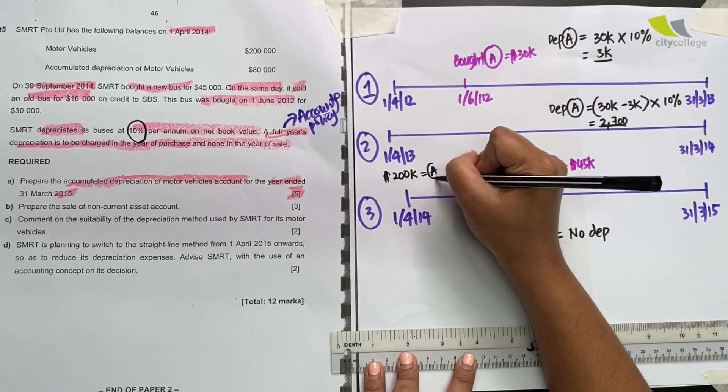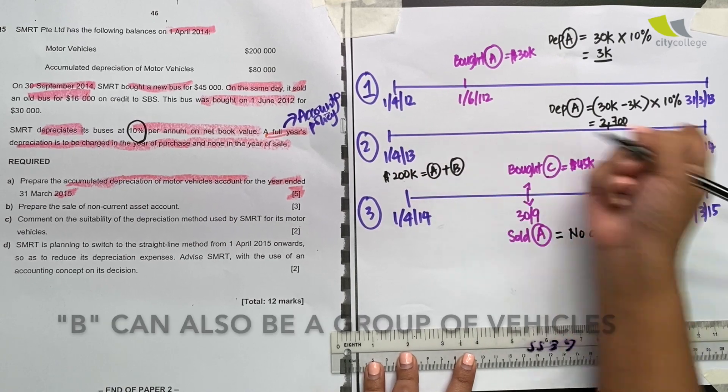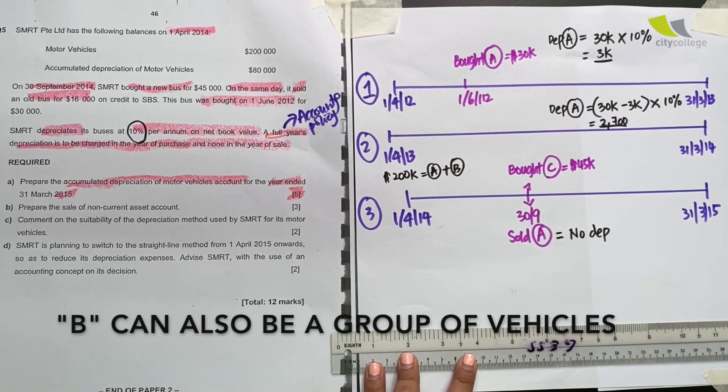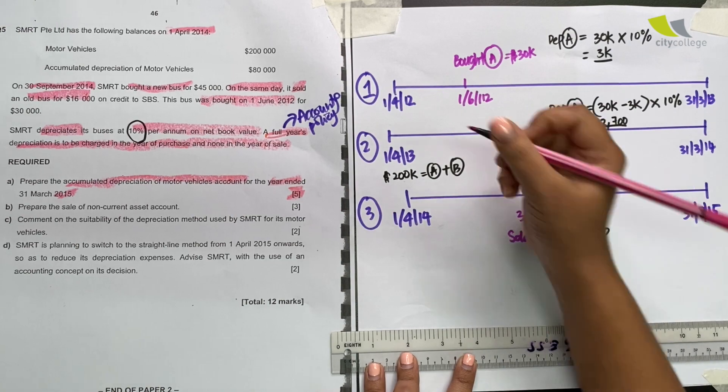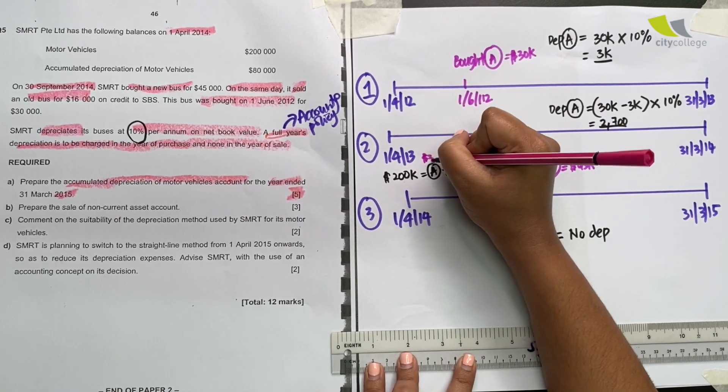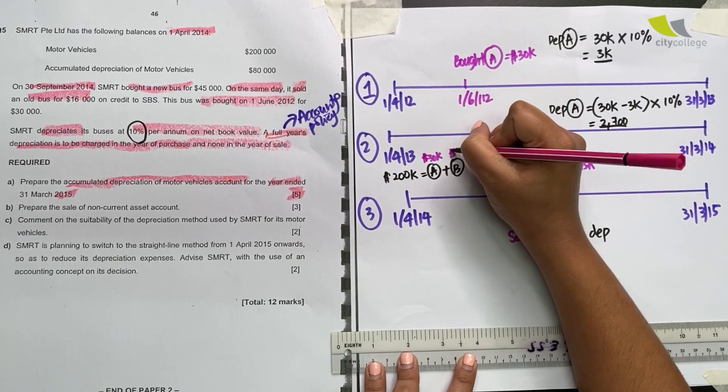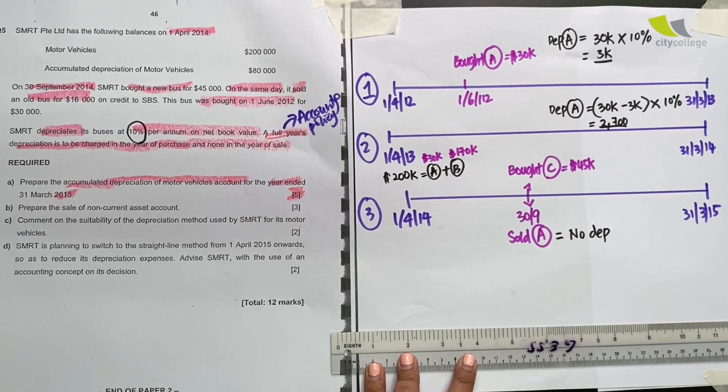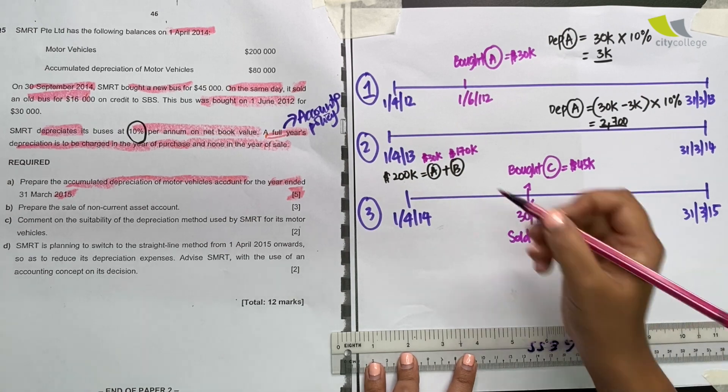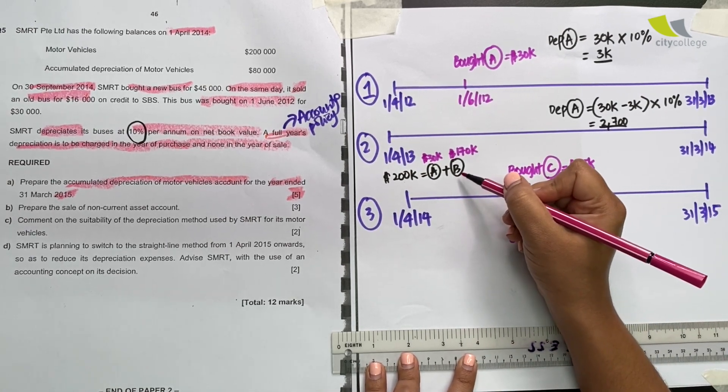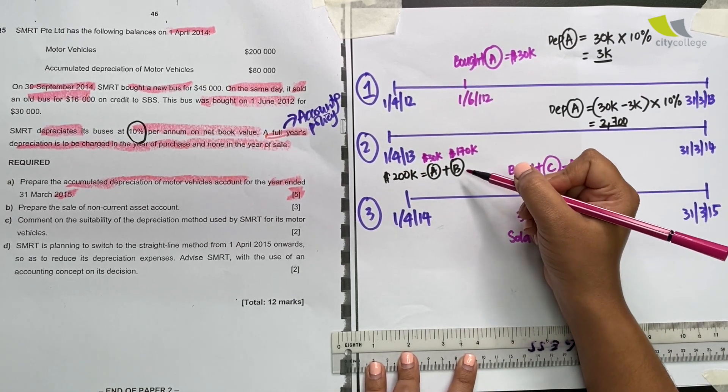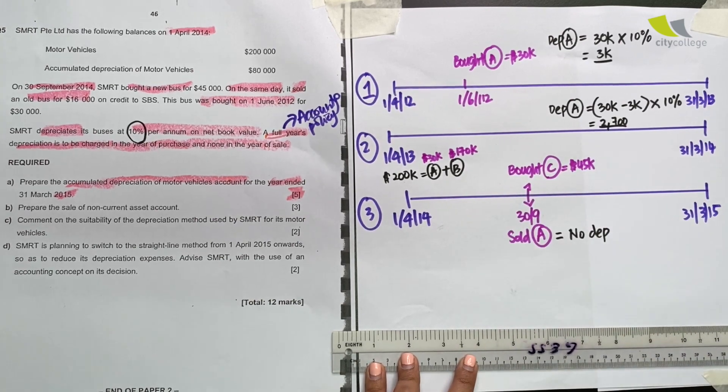So let's name the other one A plus B amounting to $200,000. If A is actually worth $30,000, we can do simple math to find out that B is actually worth $170,000. So we have another asset here which is called B as well. And we also need to depreciate that.